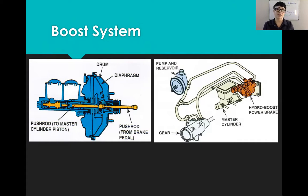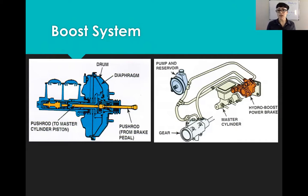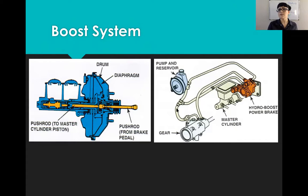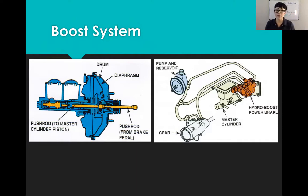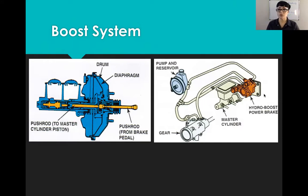On the right we have a hydro boost system. In a nutshell, it uses power steering pressure to help apply your brakes - though neither system applies brakes without your assistance, they require you to at least apply some brake while they assist. A lot of diesels use a hydro boost system because diesels don't have a throttle plate, which means they can't have vacuum in their intake manifold. Without vacuum you either do a hydro boost system or create vacuum with a vacuum pump run as an accessory off the engine.